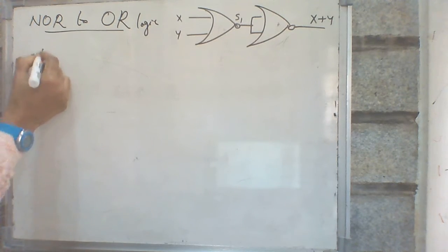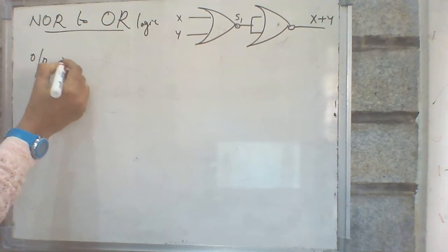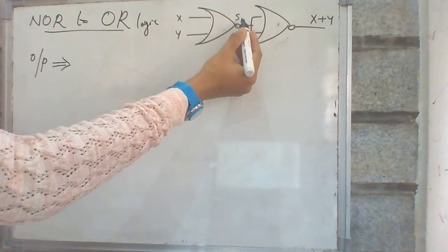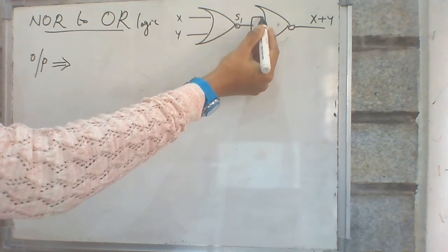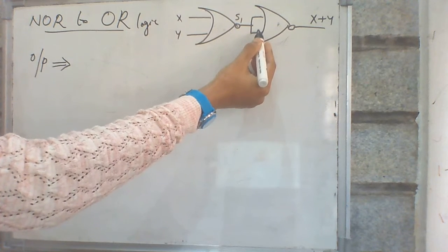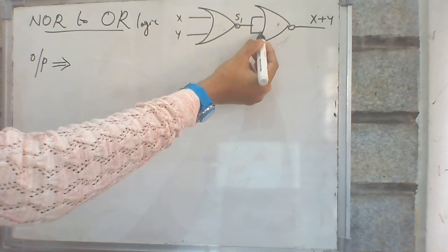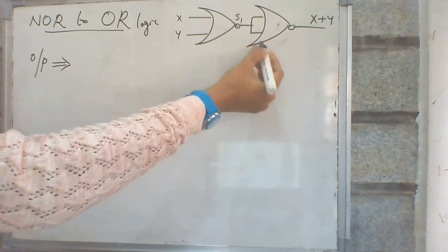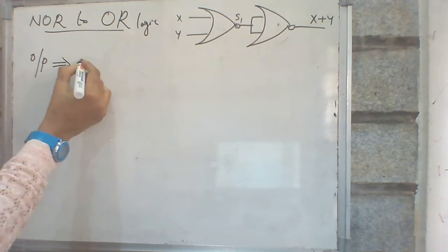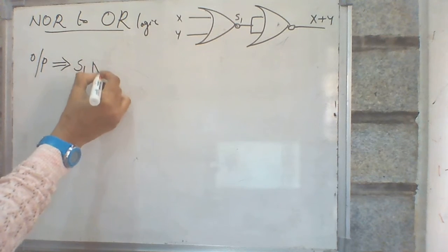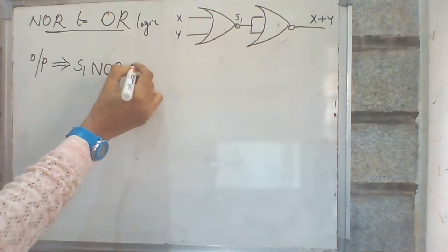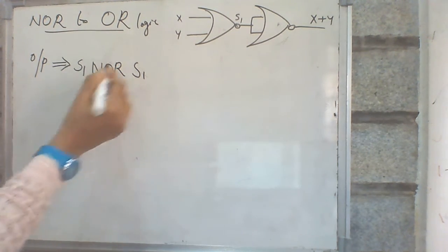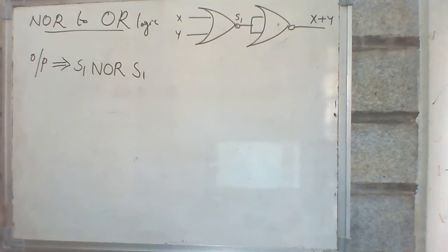Looking at the circuit, the intermediate output is S1. Both inputs of the second NOR gate are S1 — S1 here and S1 here. So the output of this second NOR gate is S1 NOR S1, which is the final output.